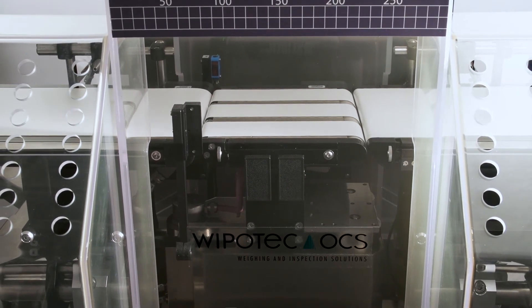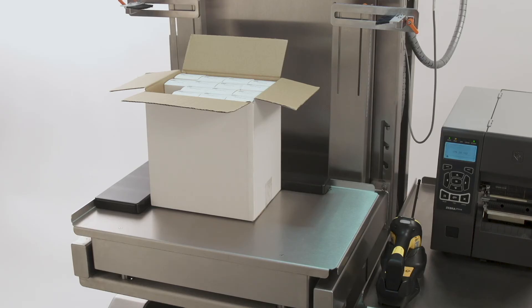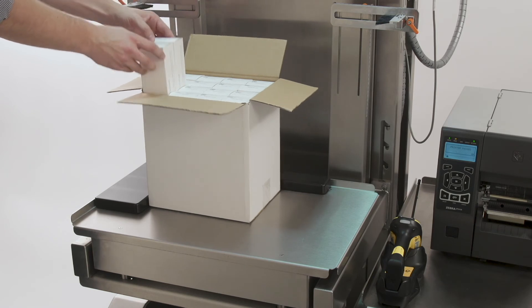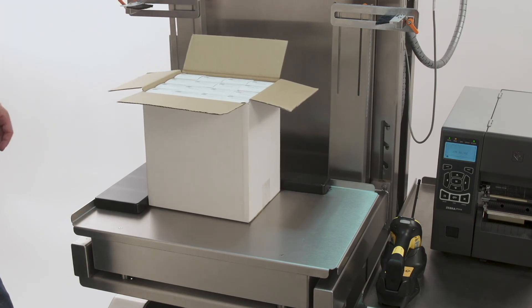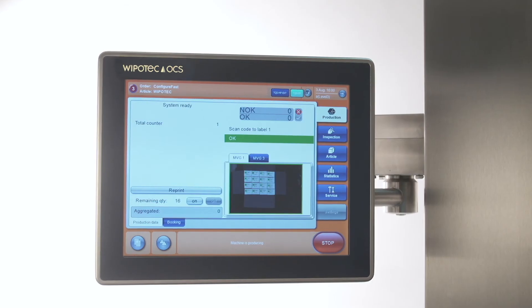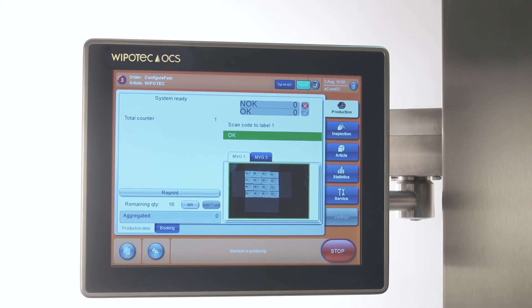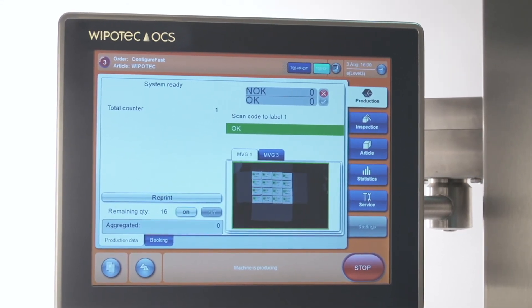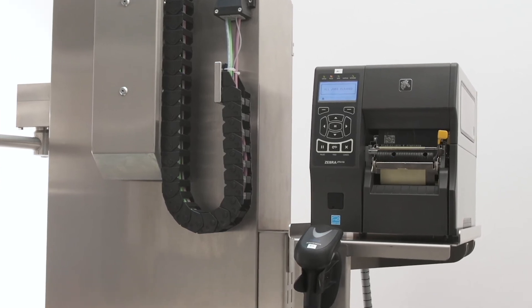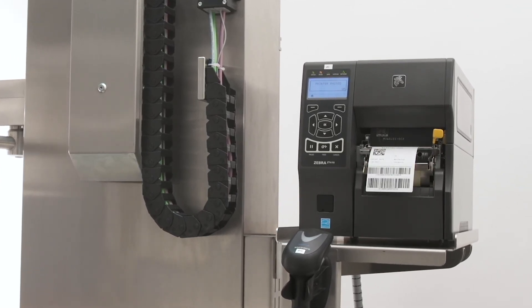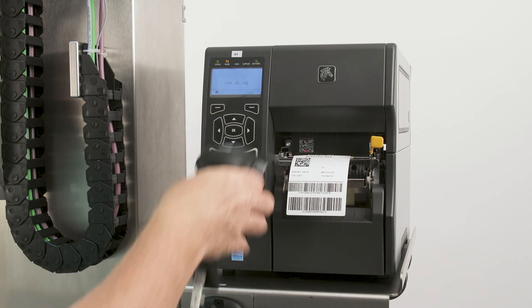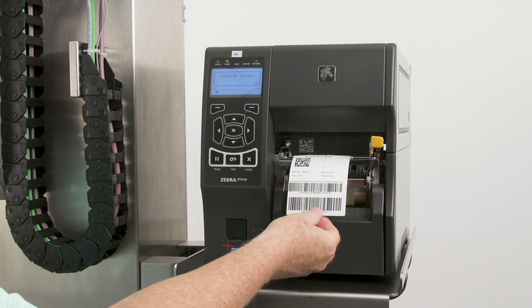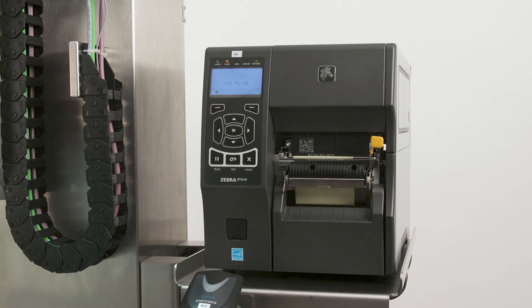The next step is the full aggregation solution from the TQS-CP machine. The operator will then pack each product into the box layer by layer. Each completed layer is then photographed from above to ensure accurate code readings. After the defined number of layers and units are reached, the aggregation level is complete and a label is automatically printed, scanned by the operator and placed on the case. Your package is now ready for palletizing and shipment.